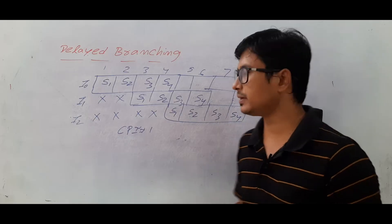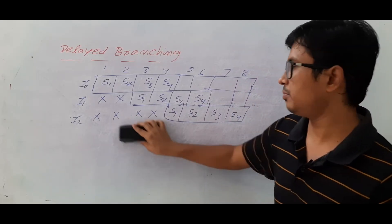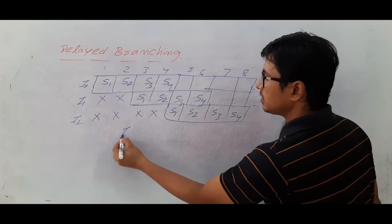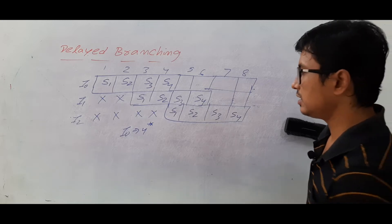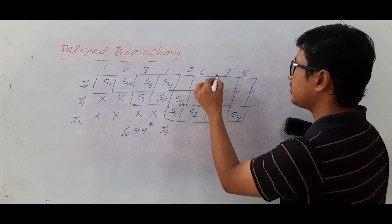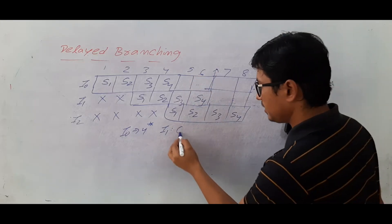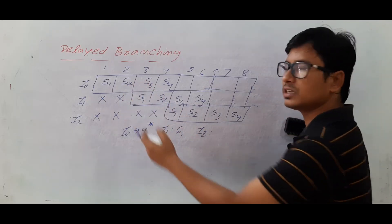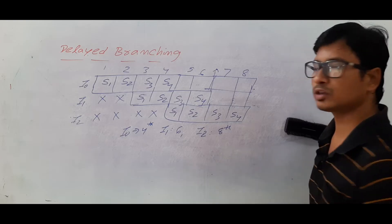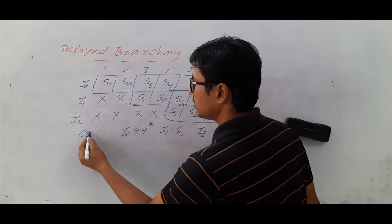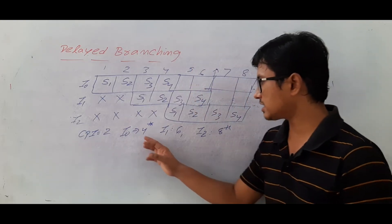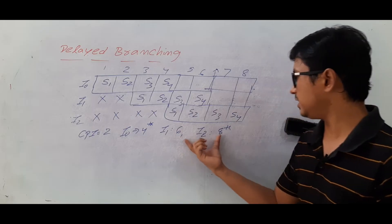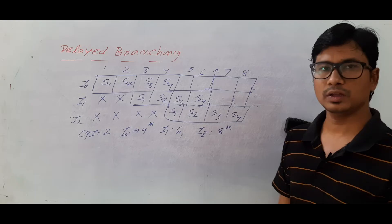Now what is happening with clocks per instruction? Ideally, clocks per instruction should be equal to one in the best pipeline. But if it is a branch instruction: I complete I0 at the fourth clock cycle, I1 finishes at clock cycle six, and I2 completes at the eighth clock cycle. So the difference between consecutive instruction completions is two, meaning clocks per instruction equals two for branch instructions.